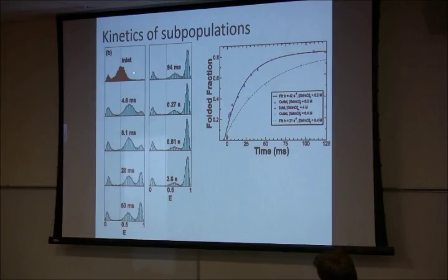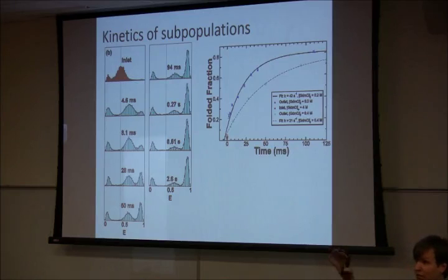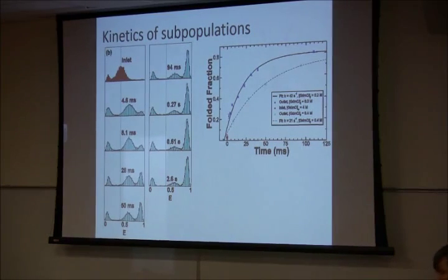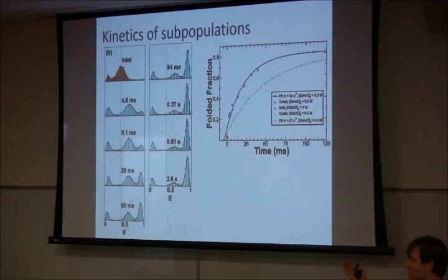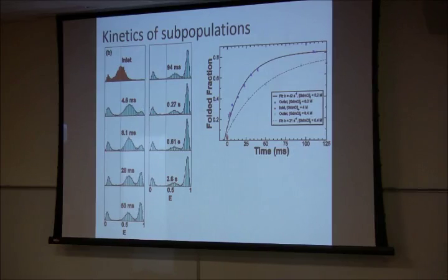We can place our laser focus at exactly one point and know what time that corresponds to — we've traded spatial resolution for time resolution. We make histograms at each point in the channel. Here's the inlet before mixing, then 4.6 milliseconds, 8.1 ms, 28 ms, 50 ms, 94 ms, 0.27 seconds, and 2.6 seconds after mixing. What we see: high transfer values mean close together — folded; low transfer values mean far apart — unfolded. We start with almost all unfolded, and as time progresses the folded state gets bigger and the unfolded state gets smaller.